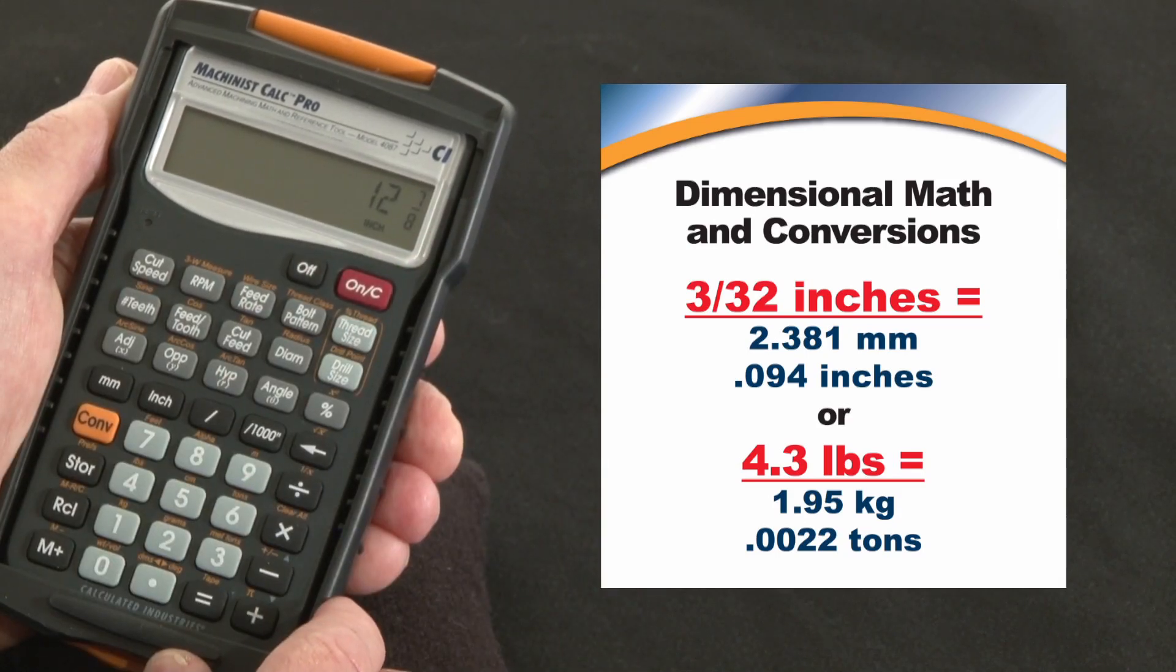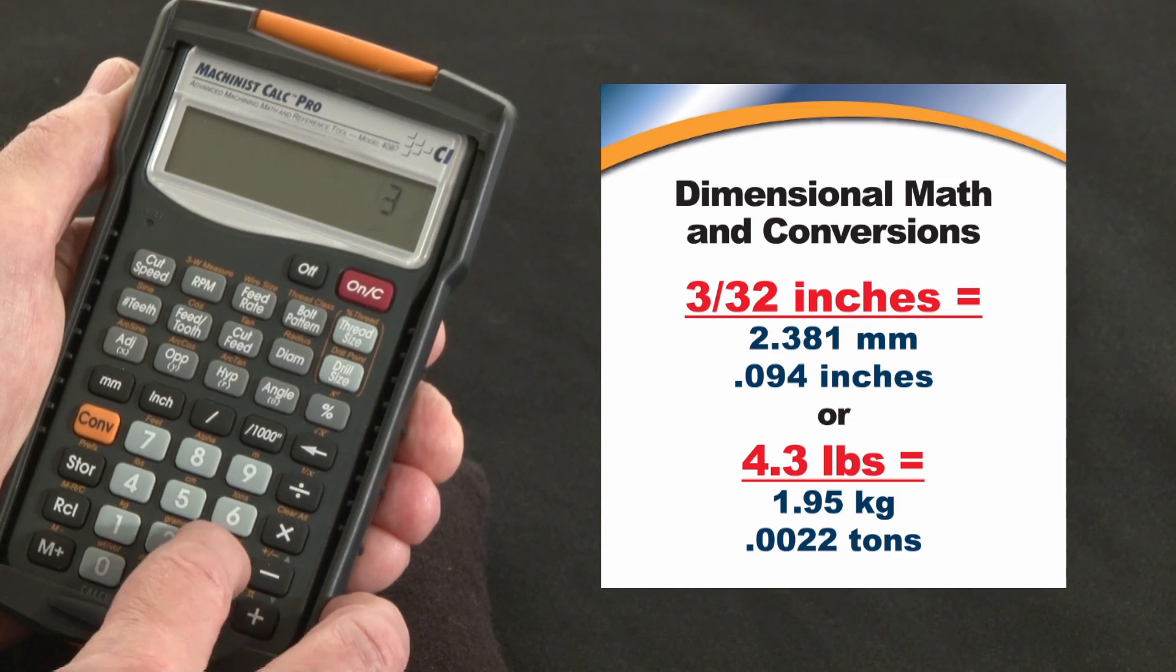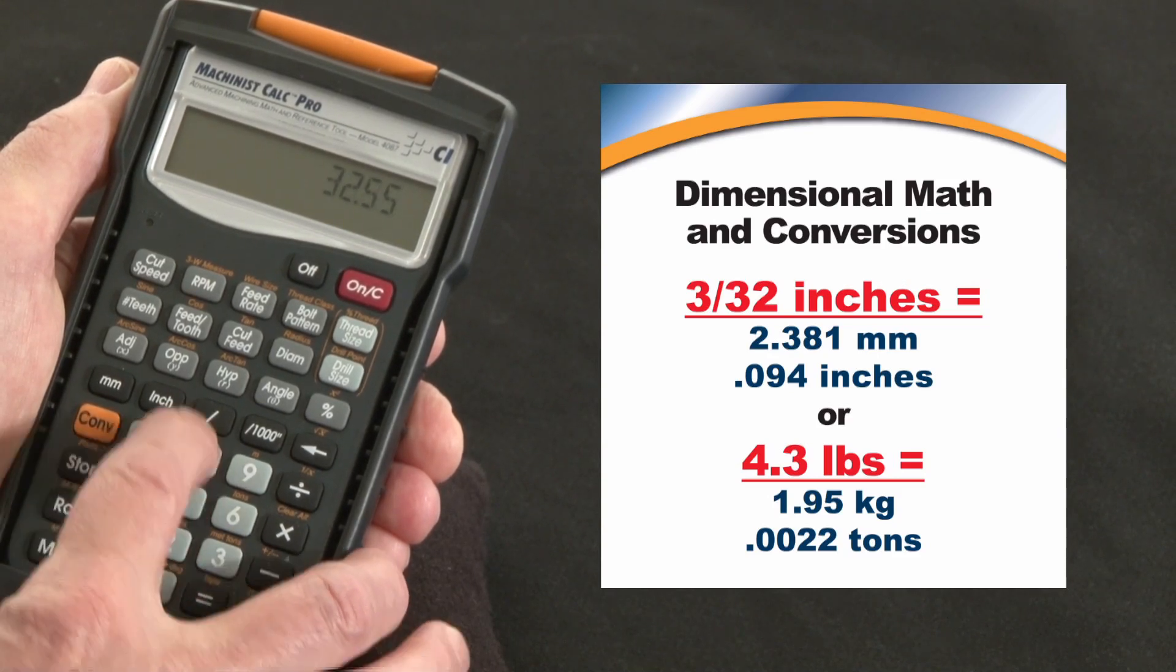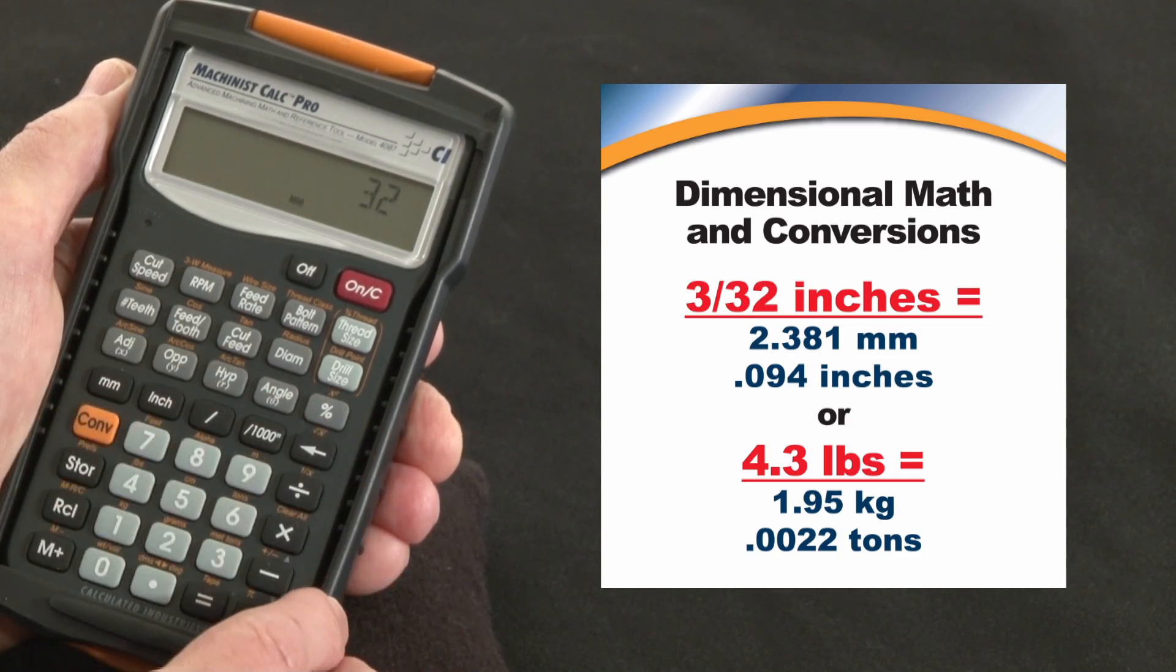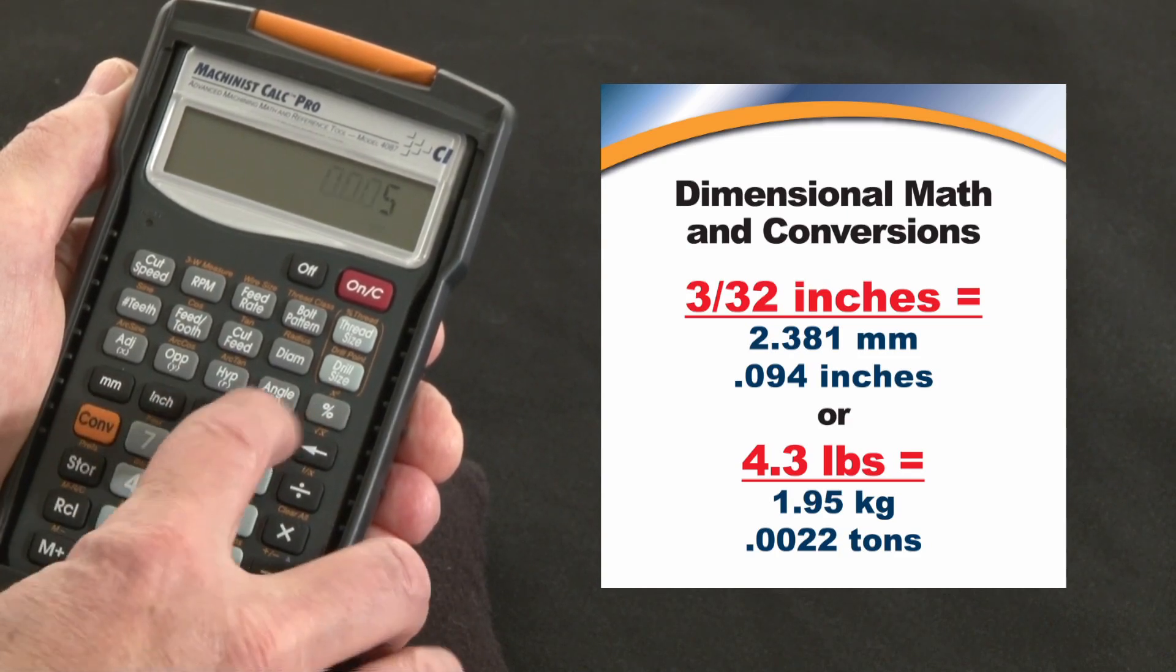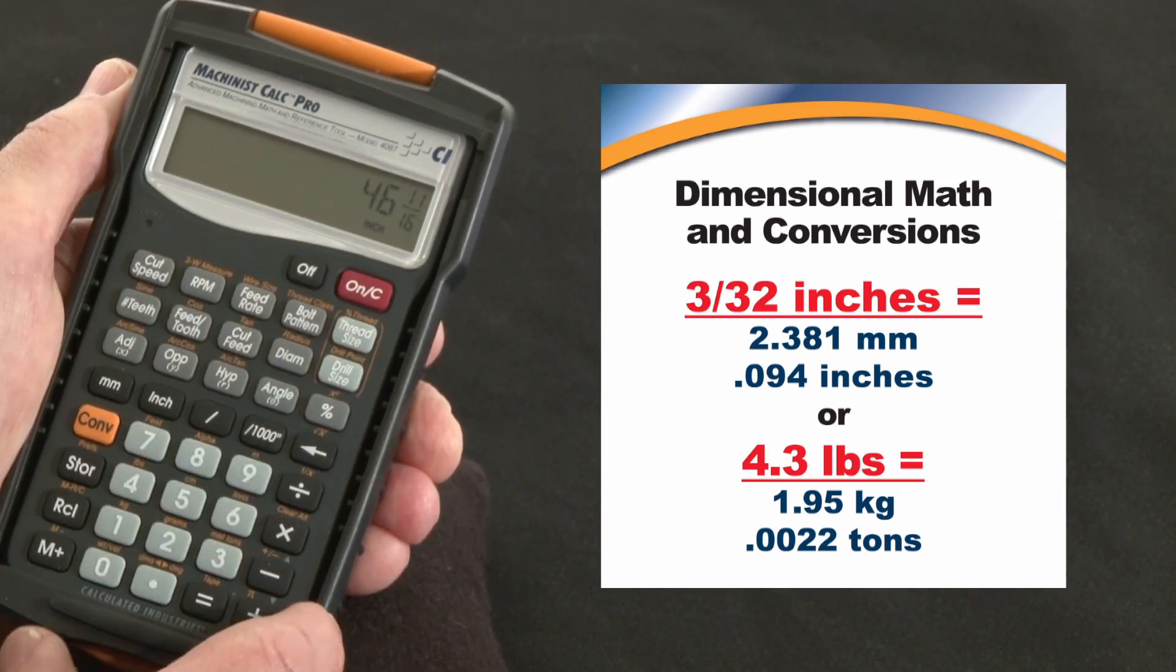You can go all the way down to a 64th of an inch, but you're not locked into that format. You can combine formats. For instance, 32.55 inches plus 32 millimeters plus 5 thousandths, just to throw that in with the speed entry key. Hit the equals. It comes back in the format you started with.